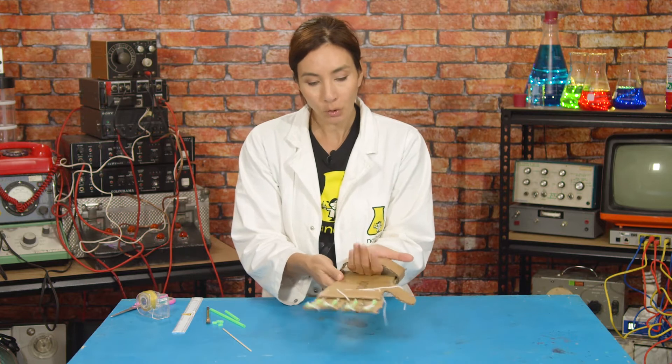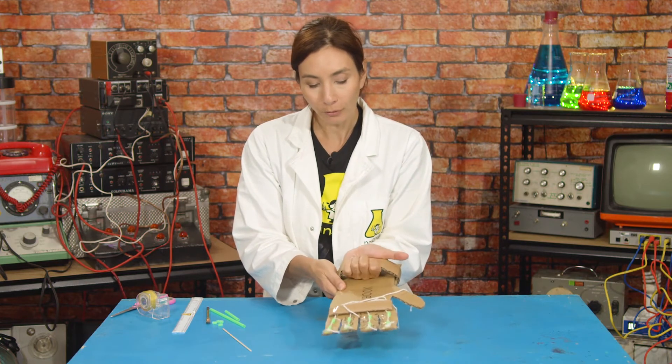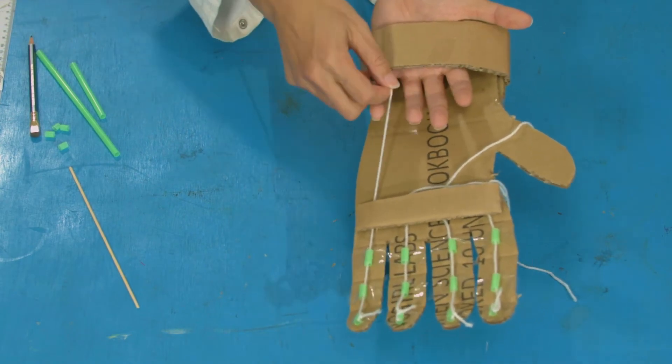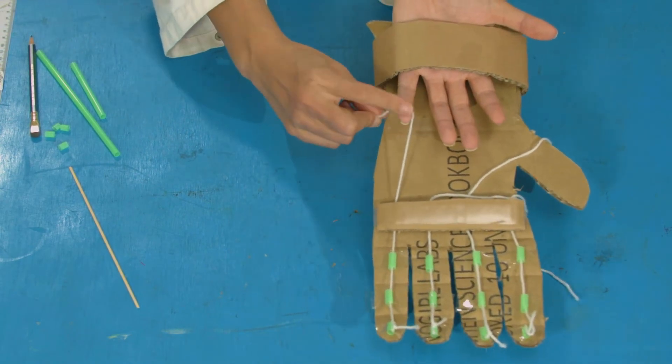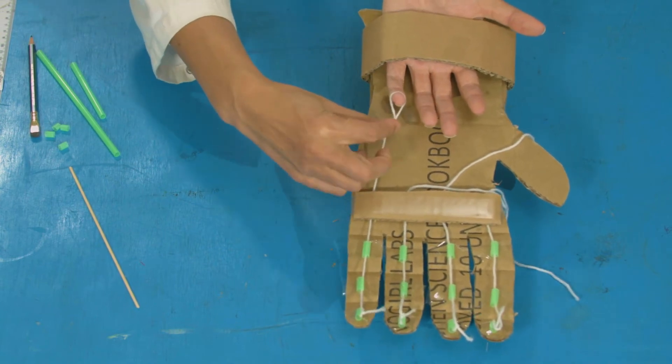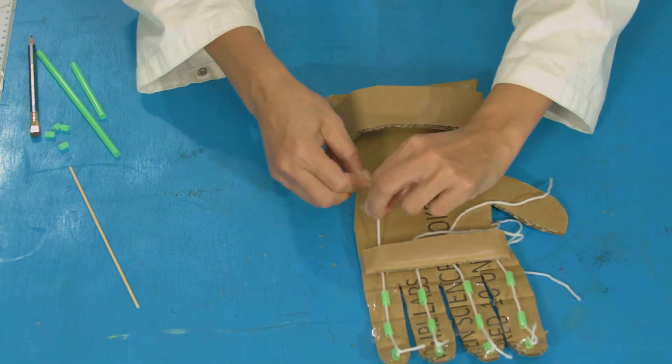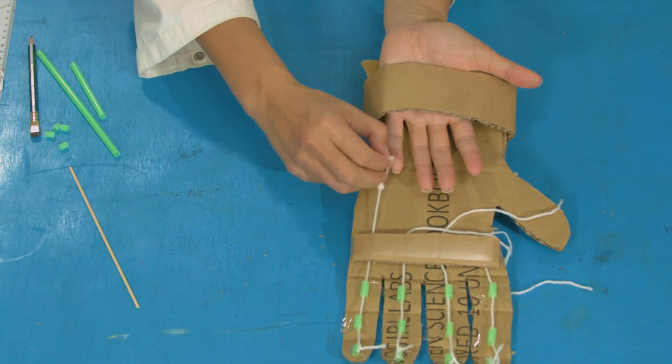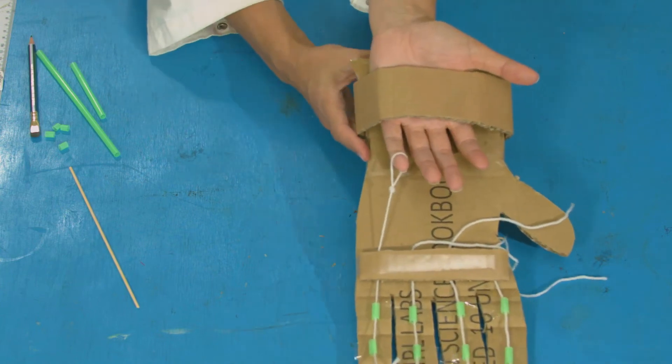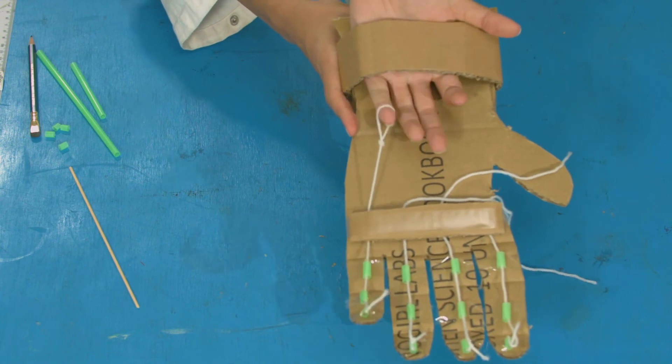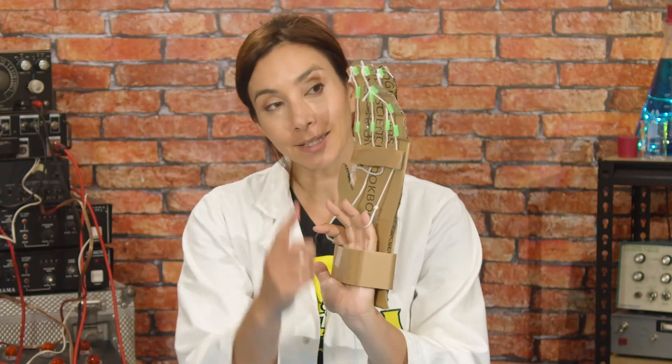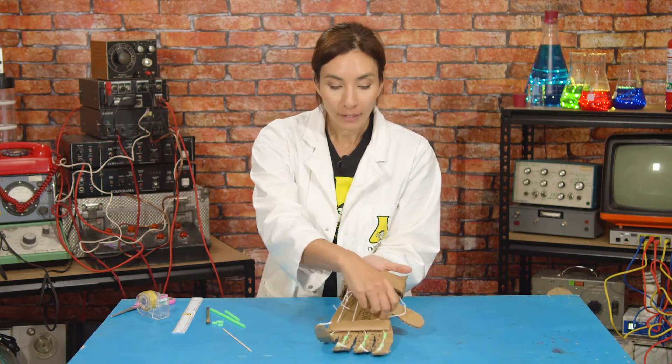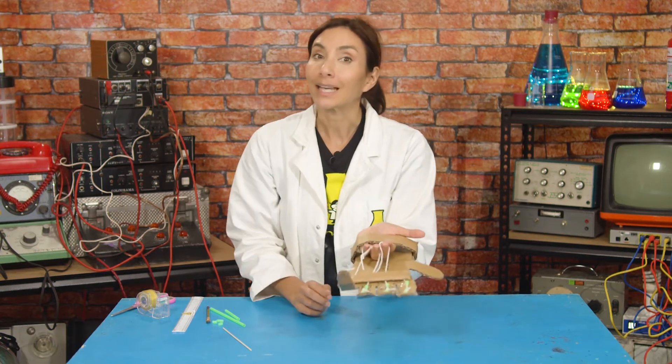Now when your hand is nice and secure in there and you can move your fingers like this, you want to take the string for each corresponding finger and then loop it around the tip of your finger here and then tie a loop for that same distance. What you should be able to do when you've tied a loop is check that when you put your finger into here and you pull down on that finger, it should pull down, just like a tendon, your giant hand. Now do that for the rest of your fingers, loop them all on and then tie them into loops.